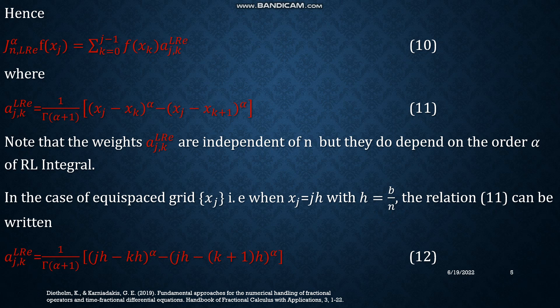Now the relation 11 can be reduced to equation number 12 because now xⱼ is replaced by j·h, xₖ by k·h, and similarly xₖ₊₁ by (k+1)·h.